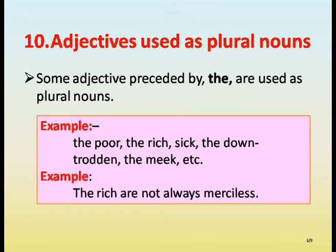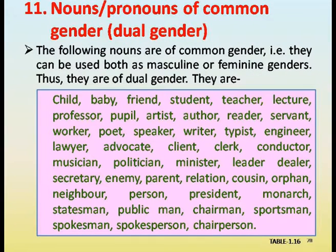Adjectives used as plural nouns: some adjectives preceded by 'the' are used as plural nouns — the poor, the rich, the sick, the downtrodden, the meek, etc. Example: the rich are not always merciless. Nouns and pronouns of common gender: the following nouns are of common gender and can be used as both masculine and feminine — child, baby, friend, student, teacher, lecturer, professor, pupil, artist, author, reader, servant, worker, poet, speaker, writer, typist, engineer, lawyer, advocate, client, clerk, conductor, musician, politician, minister, secretary, enemy, parent, relation, cousin, orphan, neighbor, person, president.